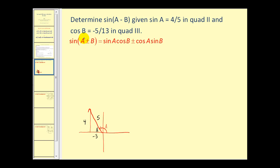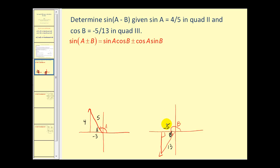For cosine(b) = -5/13 in the third quadrant, we draw angle b in standard position with reference angle b'. This is a 5-12-13 right triangle, so the opposite side would be negative 12.